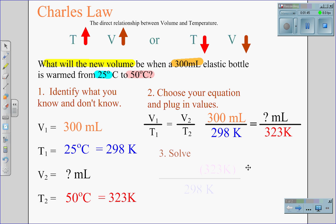We solve the equation by doing algebraic processing and moving the 323 into the numerator. 300 milliliters times 323 Kelvin divided by 298 Kelvin will give us the new volume. The new volume is 325.18 milliliters.